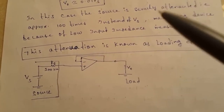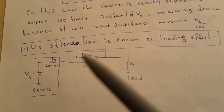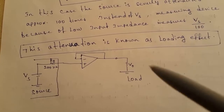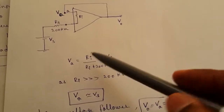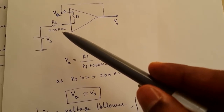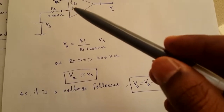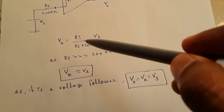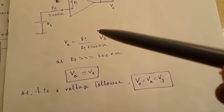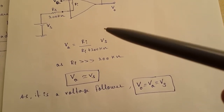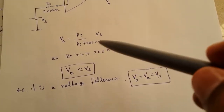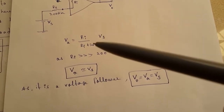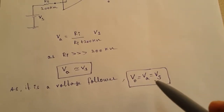To avoid the loading effect, connect a high input impedance device between the source and the load. The voltage follower, having high input impedance, is connected between the source VS (with 200 kΩ source resistance) and the load. The voltage at node A equals (R_in / (R_in + 200 kΩ)) × VS. Since the op-amp's input impedance R_in is in the hundreds of mega ohms, the 200 kΩ is negligible, so VA equals VS, and since it is a voltage follower, V_out equals VA equals VS.